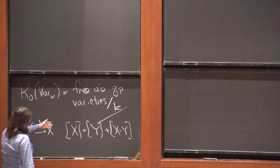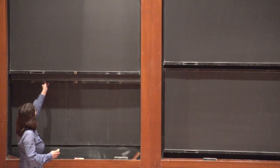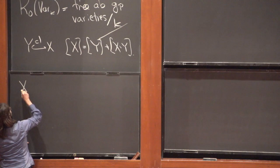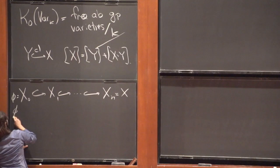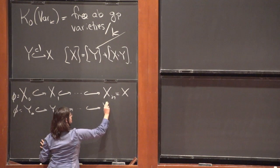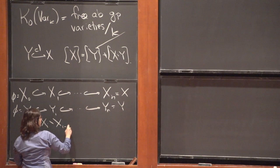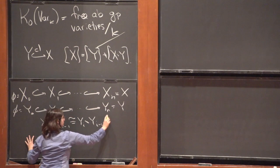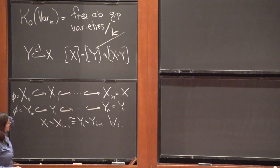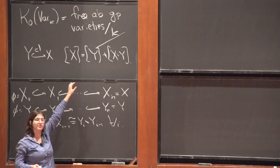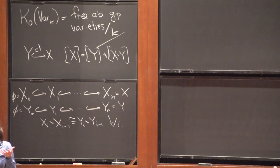This is a perfectly reasonable abelian group. You can put a multiplication on it induced by the Cartesian product of varieties. You can ask what this abelian group looks like. For example, suppose two varieties are piecewise isomorphic — meaning we have filtrations on each, and the strata are isomorphic — then we can use this relation repeatedly to see that these are going to be equal in the Grothendieck ring. So if two things are piecewise isomorphic, then they're equal in the Grothendieck ring.